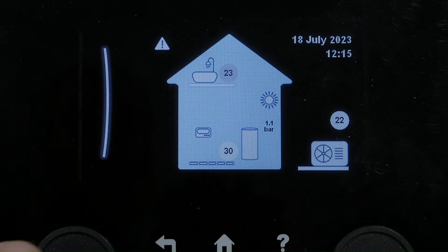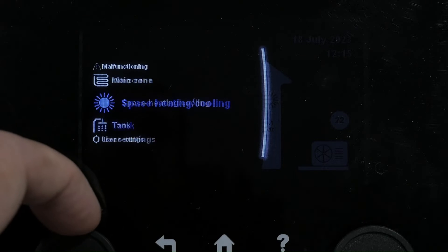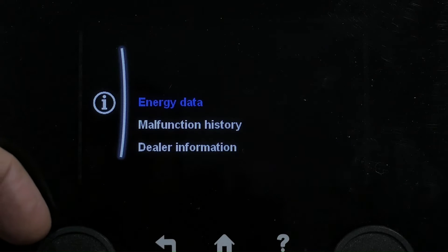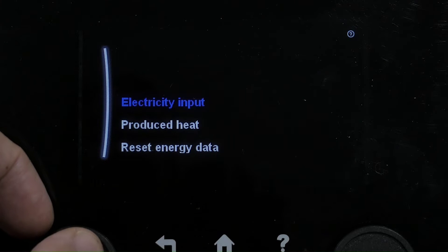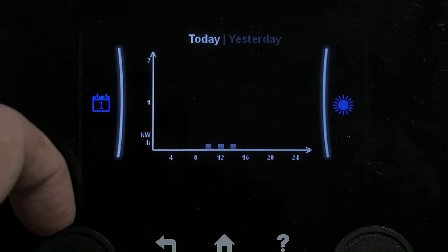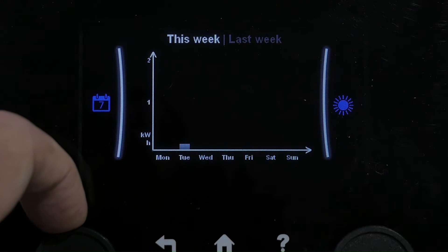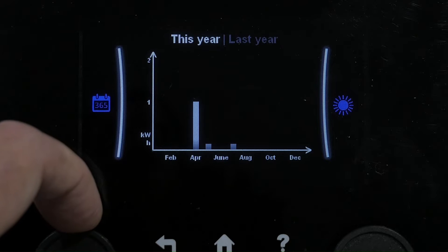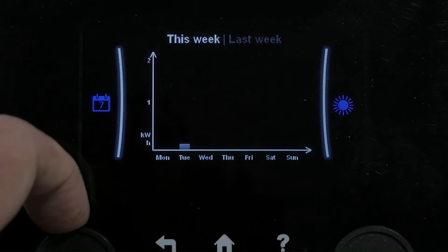To get information on your energy usage, you can go to Information, Energy Data. Here you can view the electricity input from today, yesterday, this week, and last year.